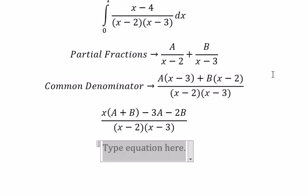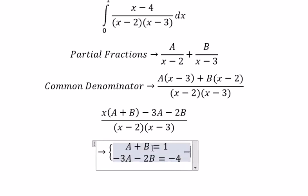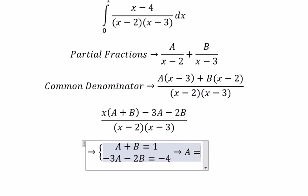We have A+B equal to 1 and -3A-2B equal to -4. So we get two solutions: A equal to 2 and B equal to -1.